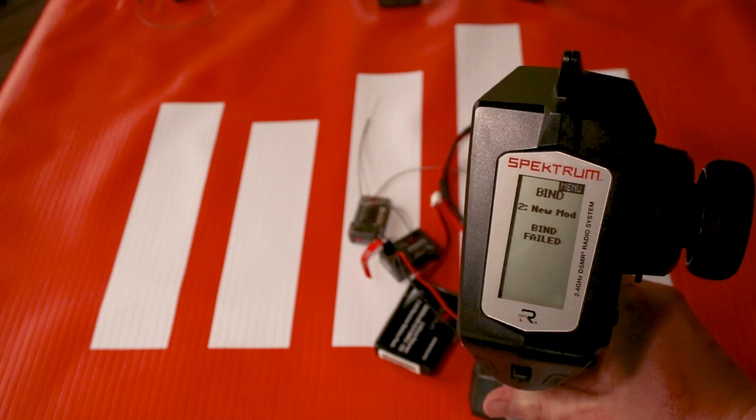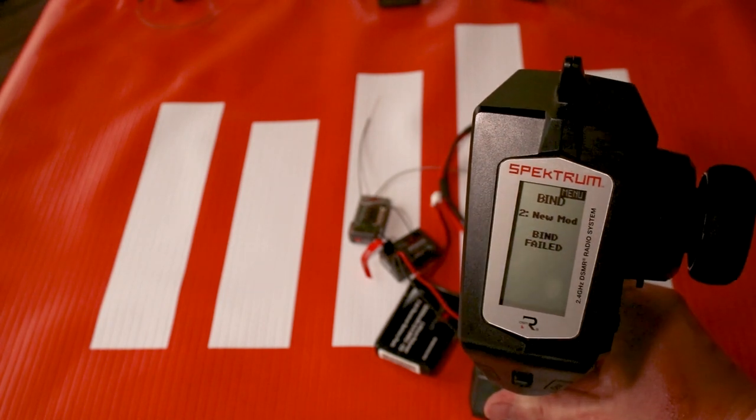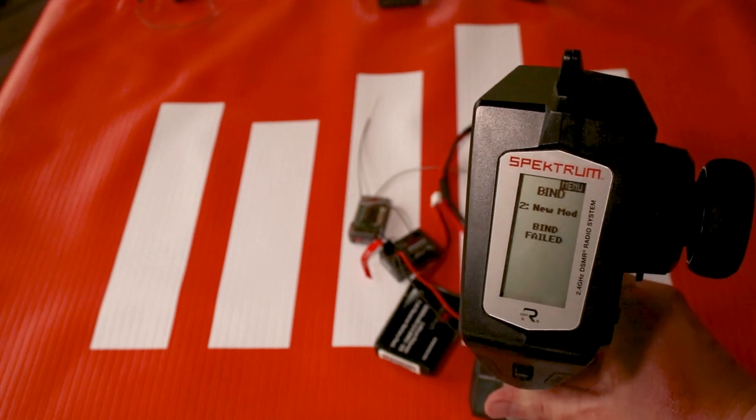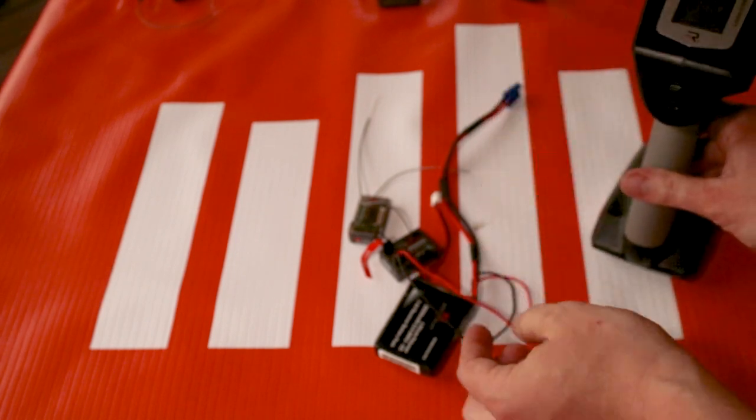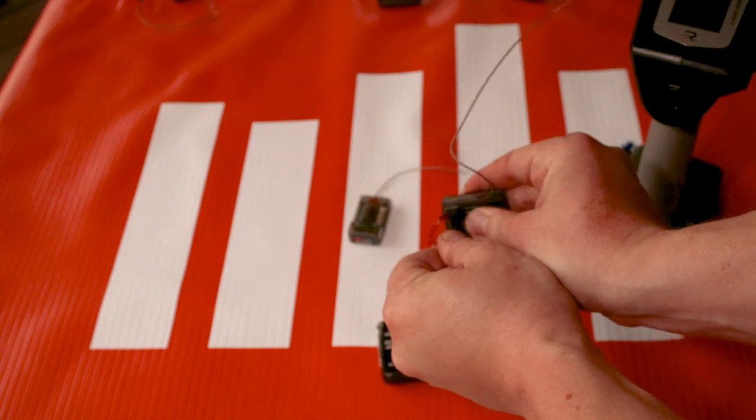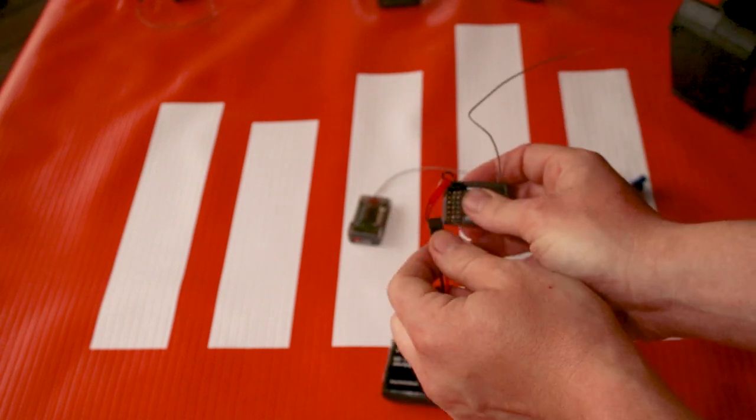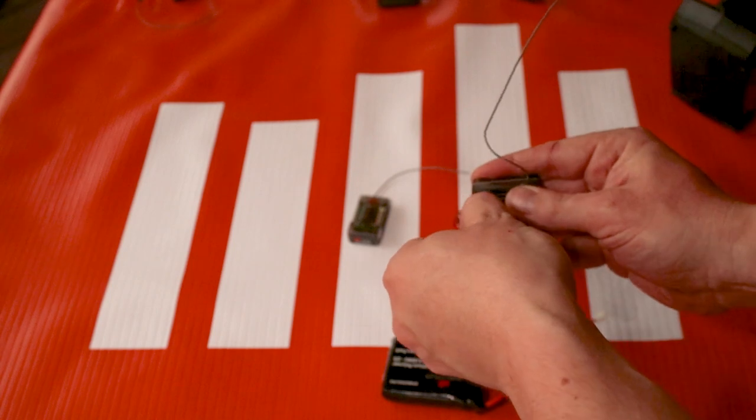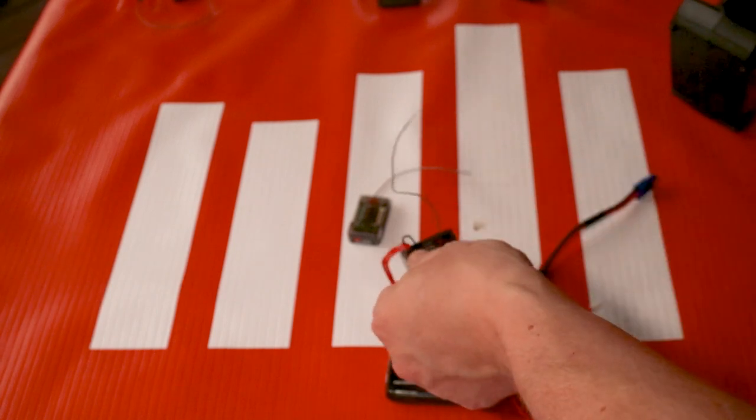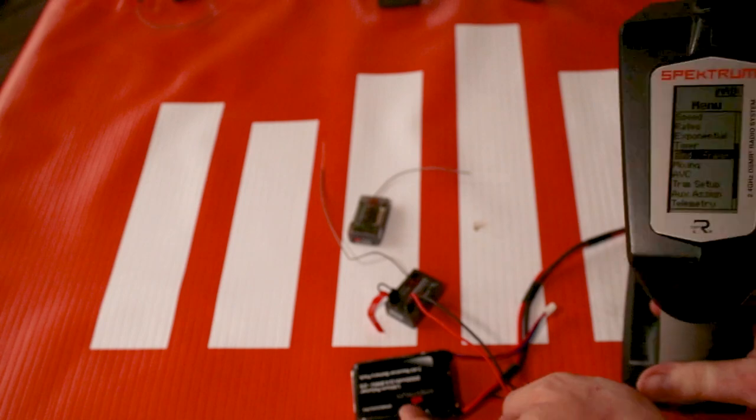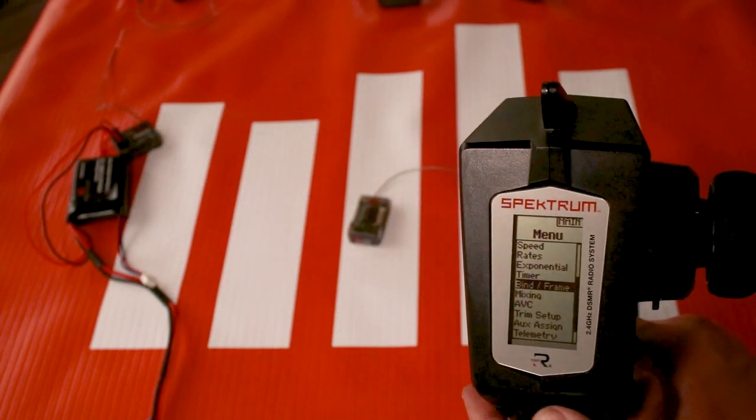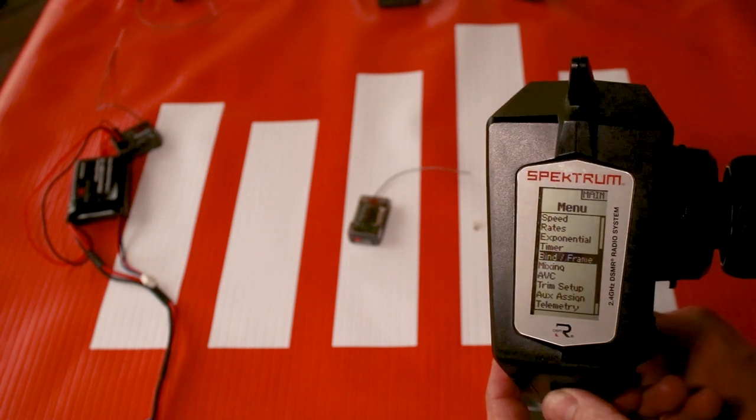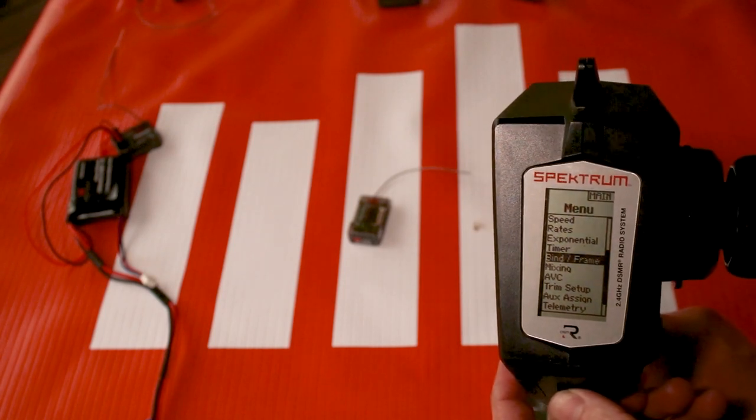We'll click bind and then it'll attempt to bind to the receiver. This brings us to troubleshooting problem number one. If you see bind failed or if your DX3 or something like that doesn't bind to it, normally what that means is that we are too close to the receiver. So what we'll have to do is leave that, we're going to unplug power from our receiver, and then plug it back in, and we're going to put some distance between the receiver and our transmitter.